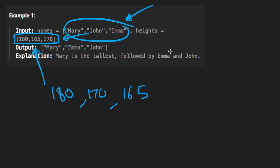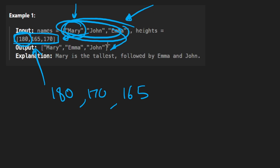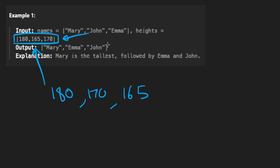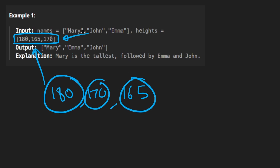In Python it's easy to get around this — you can just create an array of pairs with the name and the height, then use the height to sort them, and you'll have the relative order that we want. But imagine we couldn't do something that easy. How would you do it? Well, they make the problem very easy for us: they tell us that every height is going to be distinct.